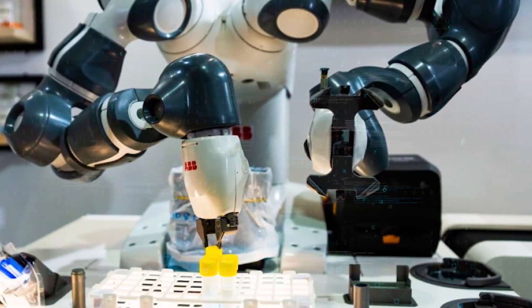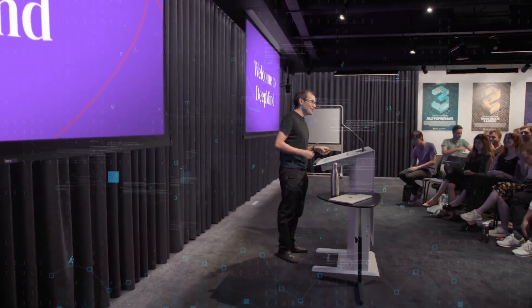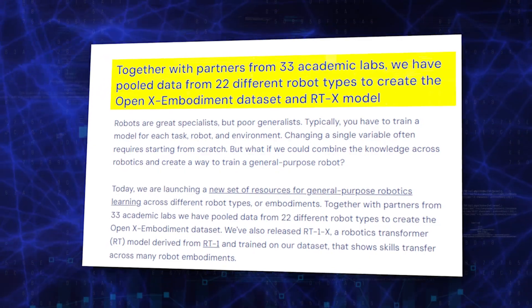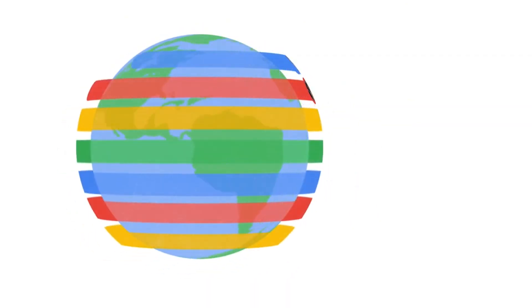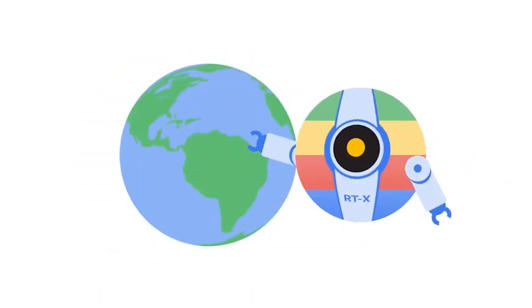That's precisely what Google DeepMind and 33 academic labs aim to achieve. They collaborated and gathered data from 22 different types of robots, resulting in the creation of the OpenX embodiment dataset and the RTX model.